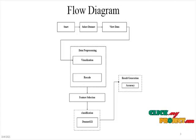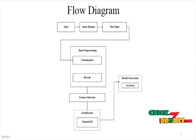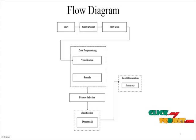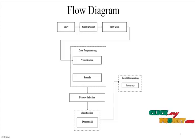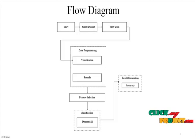Then it follows into feature selection. In the feature selection step, the dataset is split into two sets: training dataset and validation dataset. Then it applies into classification, where we implement DenseNet version-121 neural network, which is used to classify and perform analysis of plant disease identification. The output result will be the final decision.